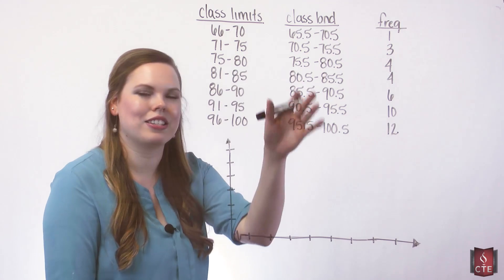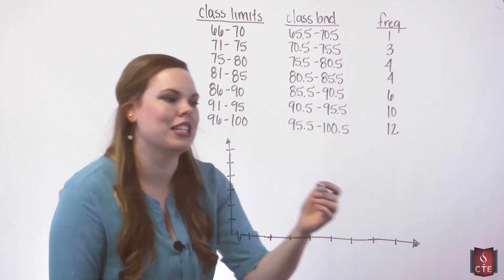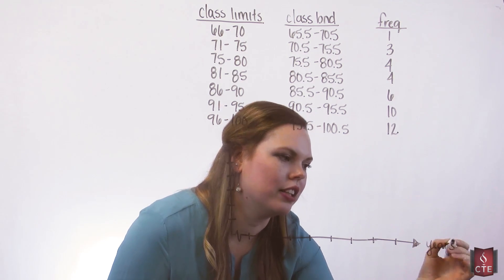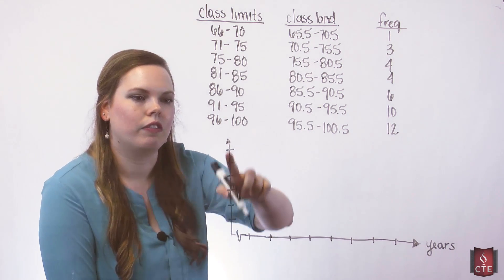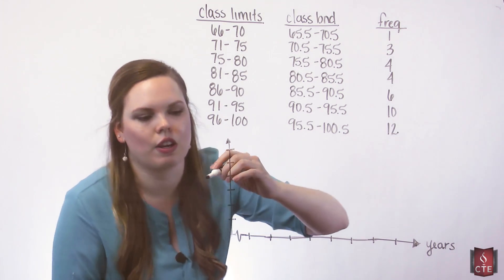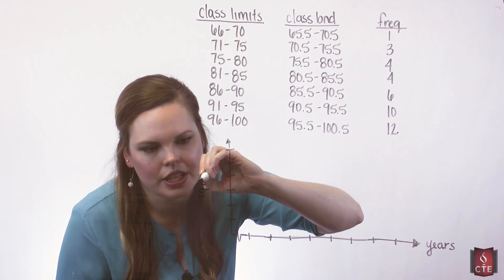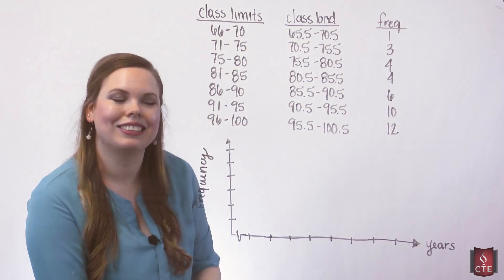These are pennies, and this is their years of the pennies that we collected, 40 pennies. And so I'm going to label the horizontal axis with the years, because that's where I'm going to put my class boundaries. And then I will label the vertical axis as the frequency, because the height of the bar represents the frequency of the class.